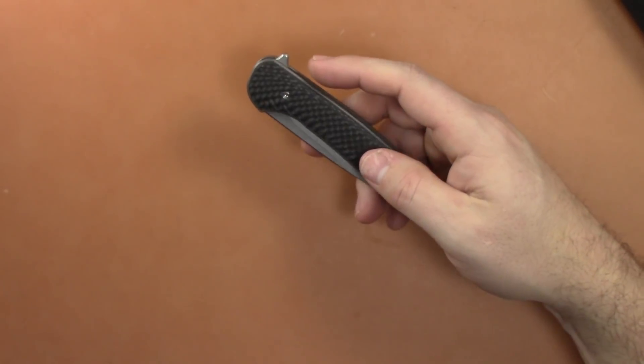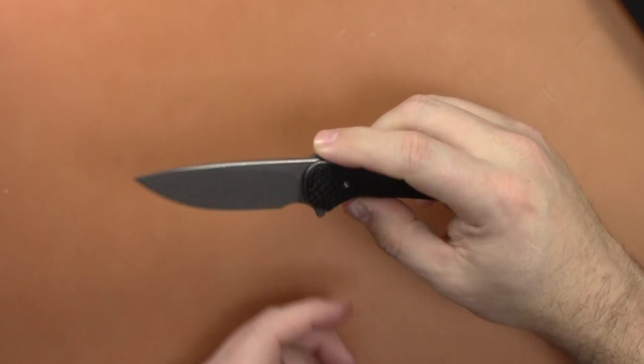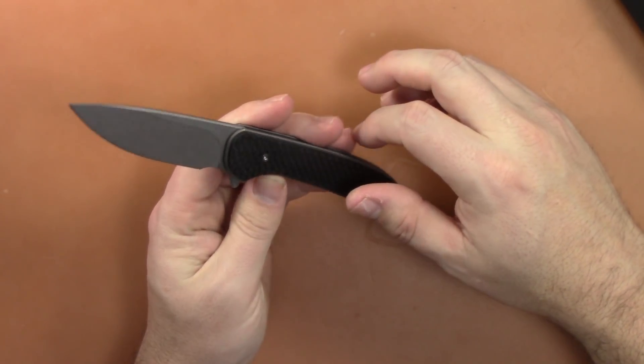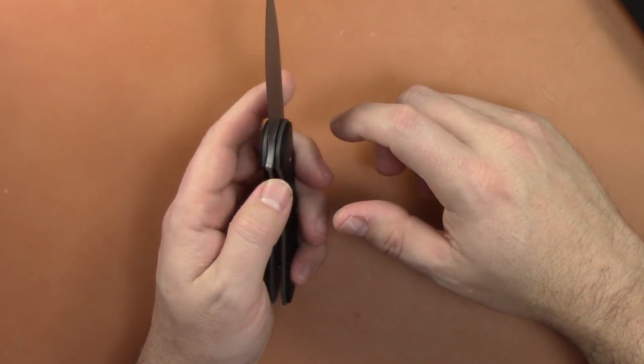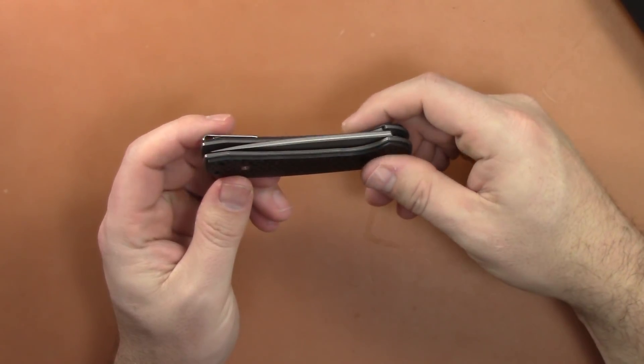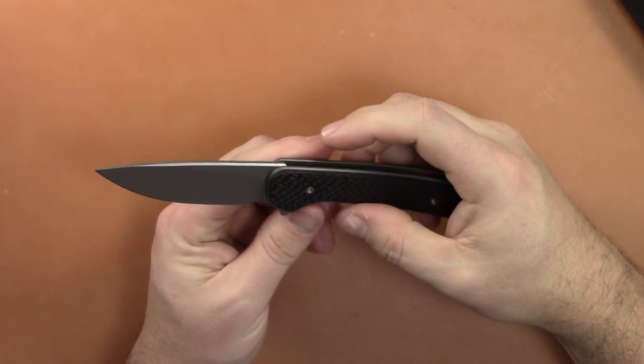This little guy came out and I thought, man, what a deal! You've got titanium liners, nice smooth contoured G10 scales, S35VN blade, bearing flipper, Ferrum Forge design, fantastic fit and finish done by WE Knives.